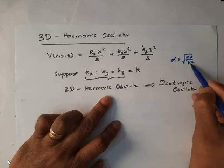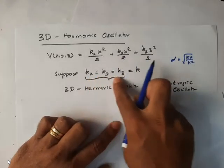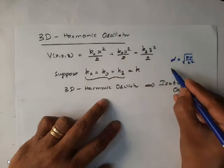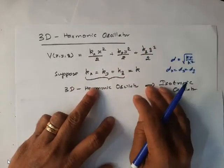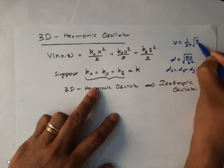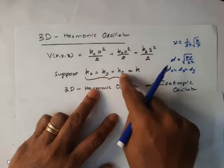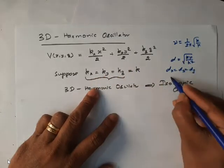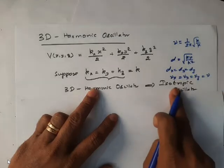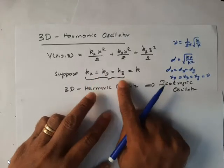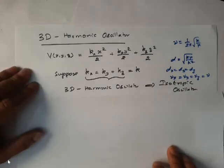Alpha depends on the value of k, because mu and h-bar are constant for a given molecule. The only variable here is k. Since k is equal for all three components, alpha is also equal — alpha x, alpha y, alpha z are also equal. If alpha are equal, then since k is equal, frequency is also equal, because frequency ν = (1/2π)√(k/μ). Since kx, ky, kz are all equal for the isotropic oscillator, the frequencies νx, νy, and νz are also equal; you can take them simply as ν. For the isotropic oscillator, all force constants are equal, alpha values are equal, and frequency is also equal.